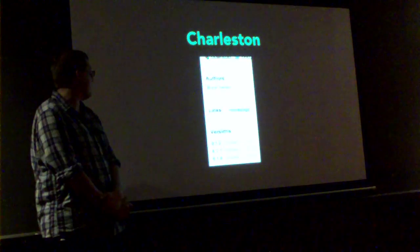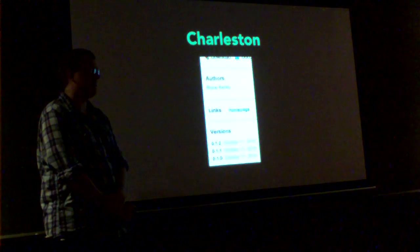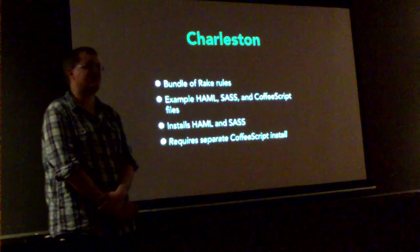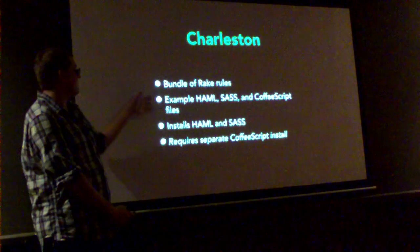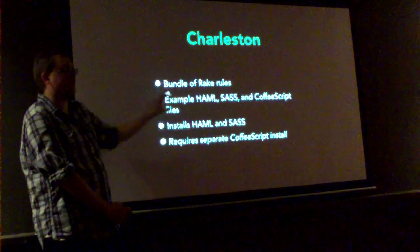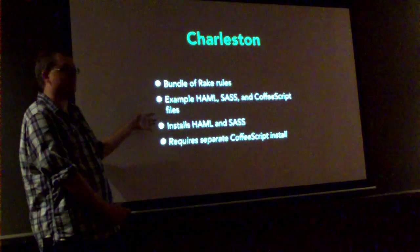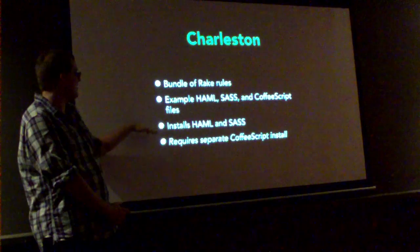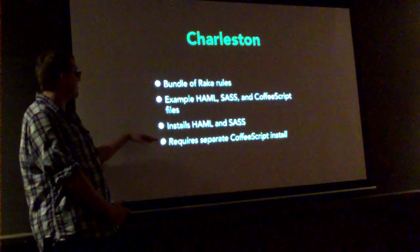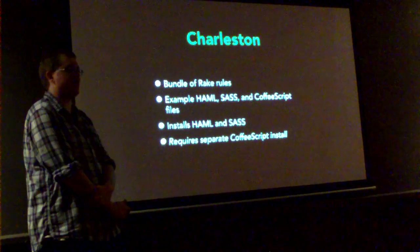So it just came out — I just released it. It's pretty much just a bundle of Rake rules to compile Haml to HTML, SAS to CSS, CoffeeScript to JavaScript, and put them in the right place to build a site. Since it's written in Ruby and it's a gem, if you just install Charleston it will bring Haml and SAS along with you. I don't depend on CoffeeScript yet because I haven't figured out a good way to automatically install it.